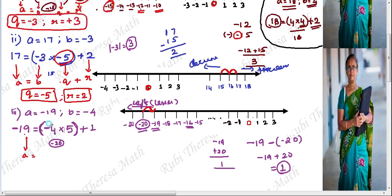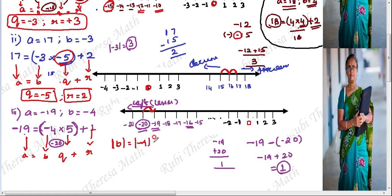Verify using A equals BQ plus R: minus 19 equals minus 4 into Q plus R. The remainder is 1, which is a positive integer — condition satisfied. The modulus of B is |minus 4| equals plus 4. Since 1 is less than 4, the second condition is also satisfied. Quotient and remainder are correct.